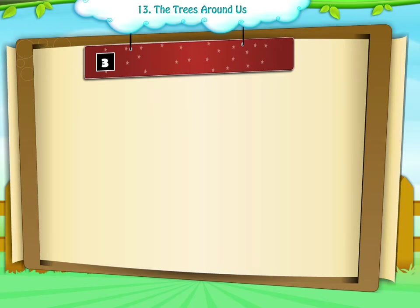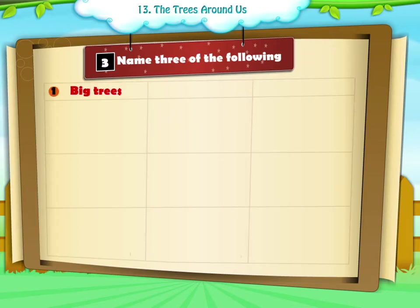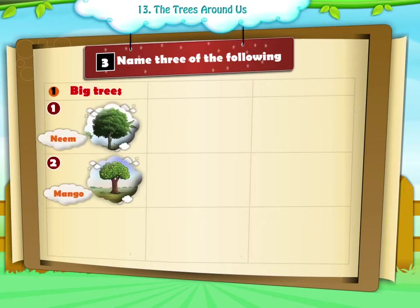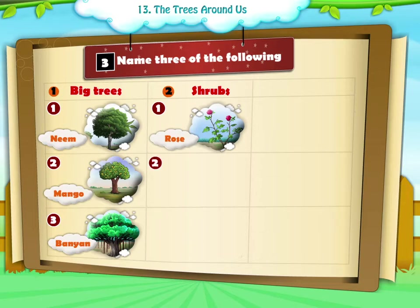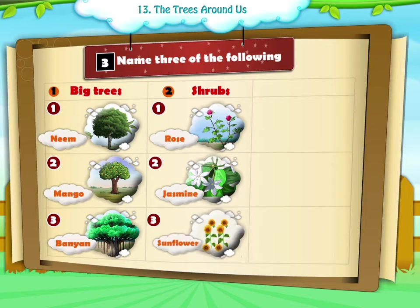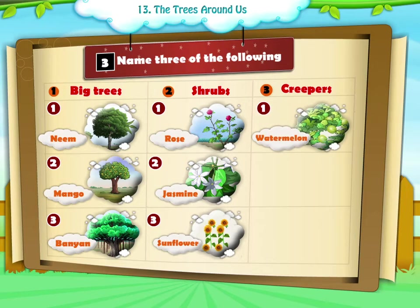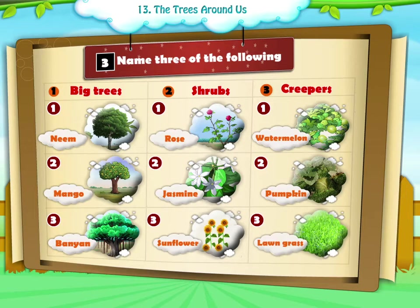Exercise 3: Name three of the following. 1. Big trees: neem, mango, banyan. 2. Shrubs: rose, jasmine, sunflower. 3. Creepers: watermelon, pumpkin, lawn grass.